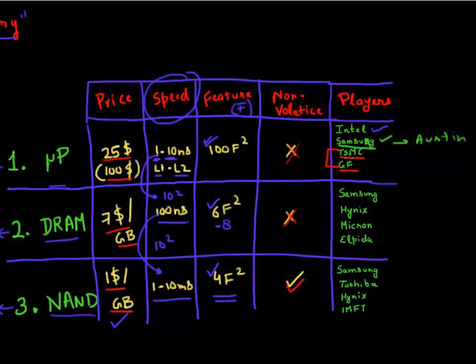DRAM, again, the biggest supplier of DRAM is Samsung, followed by Hynix. Both of these are Korean companies. And Elpida, which used to make DRAM, but recently went bankrupt. The only American supplier of DRAM is Micron.